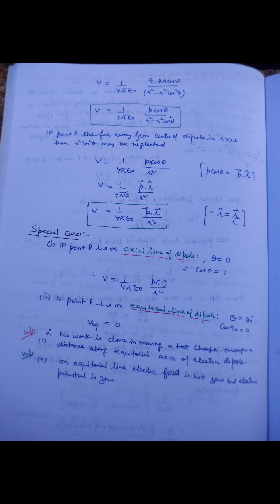On the axial line, θ = 0°, so potential at any point on the axial line comes out to V = 1/(4πε₀) × p/R². On the equatorial line, θ = 90°, so potential at any point on the equatorial line comes out to be zero, meaning no work has to be done to move a test charge along the equatorial line.